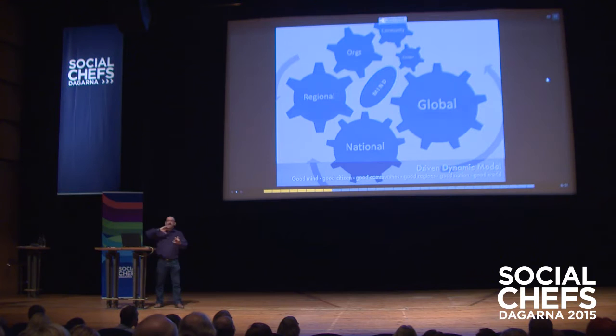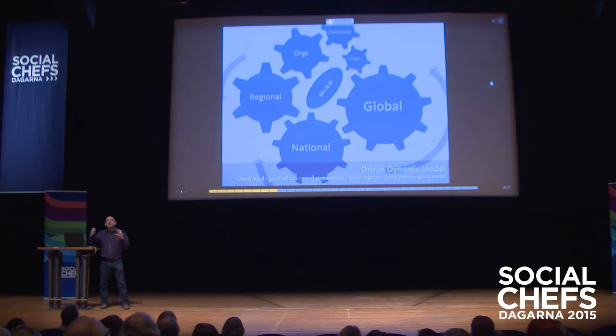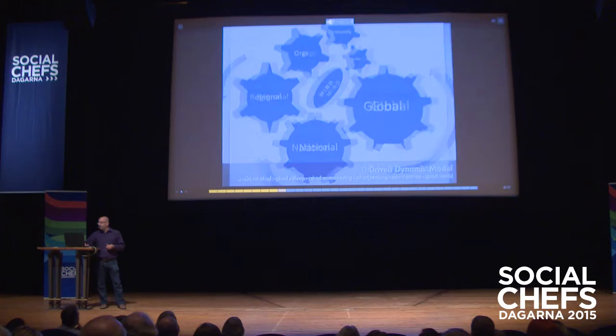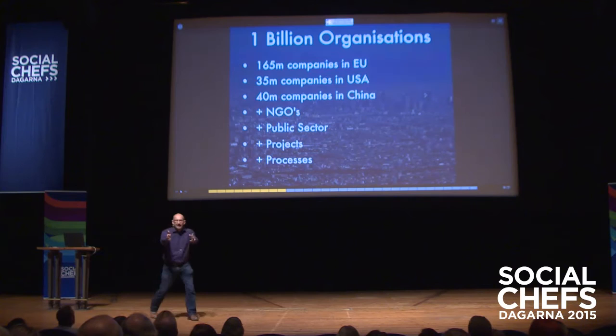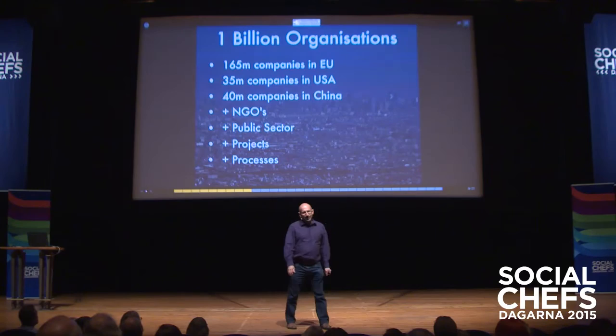That's the model we built. We went further, looking at academic linkages between these dynamic models. We started by measuring one section: organizational value. There are 165 million companies in the EU, 35 million in the US, 40 million in China — about a billion organizations in the world. Normally, measuring social value is a survey process taking three to 18 months, costing 100,000 to 200,000 euros with a firm like KPMG, or about 5,000 euros with a one-person consultant.